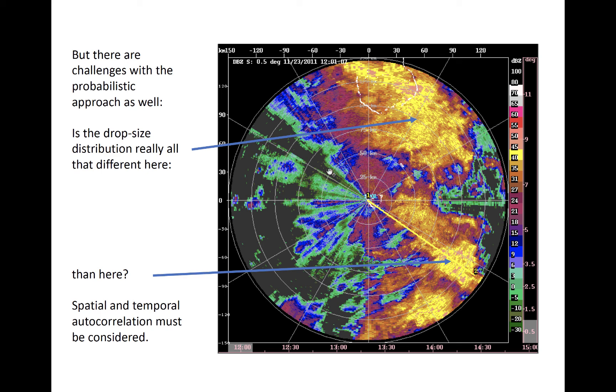For example, if we know something about the drop size distribution in one part of the radar domain, this probably allows us to narrow the likely width of PDFs used to estimate rainfall elsewhere in the radar domain.